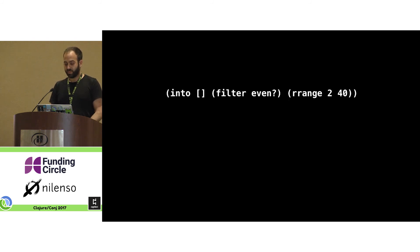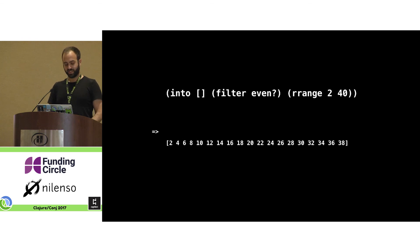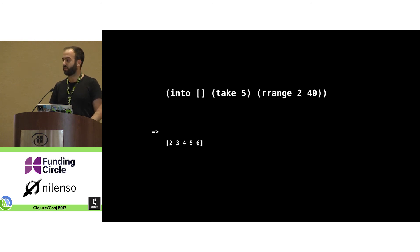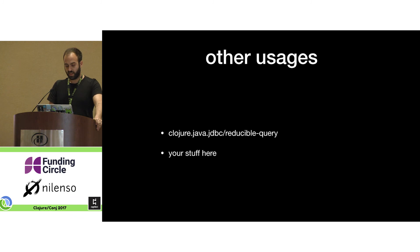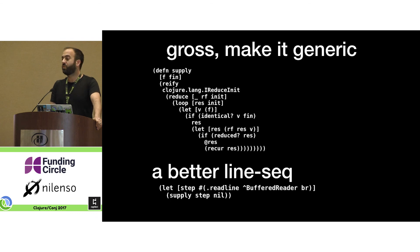Here's an example of using this function. Here's the three-arity `into` with a transducer in the middle — it works. Here's an example using it with early termination: the `take` transducer uses this early termination, and that also works if you stick to this recipe. Sean Corfield implemented a reducible JDBC query based on these ideas. You should implement your own collections with this formula. If you think reifying an interface every time is a lot of code, and the reduced handling is subtle, you can make it generic.